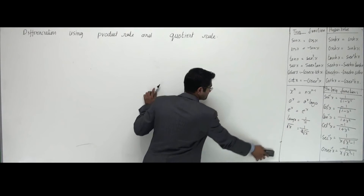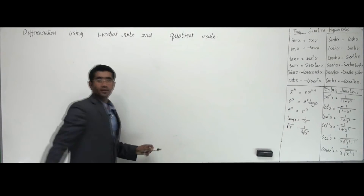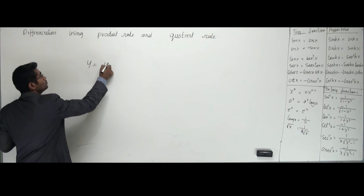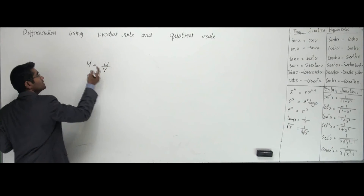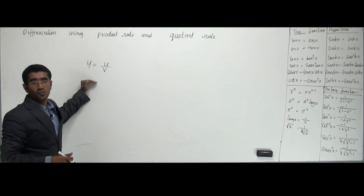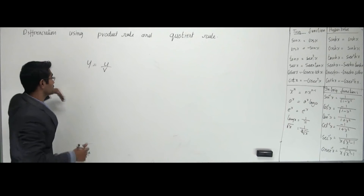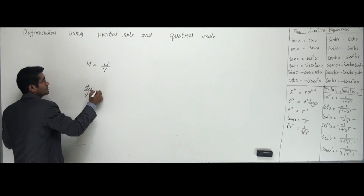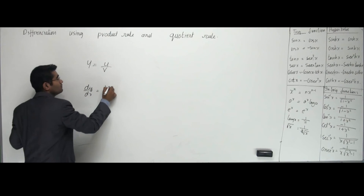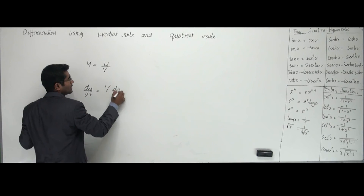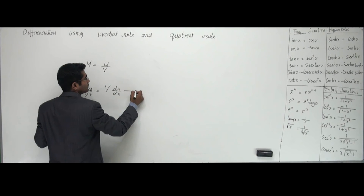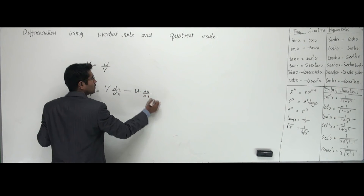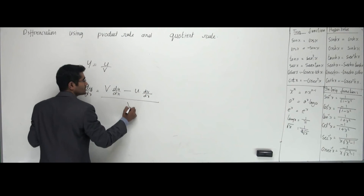If y = u/v, these two functions are coming one over the other. The quotient rule says: dy/dx = [v · (du/dx) − u · (dv/dx)] / v². Again, I'm differentiating only u and only v separately.